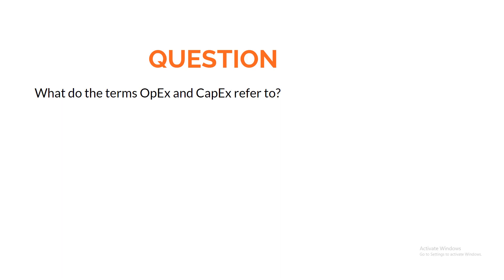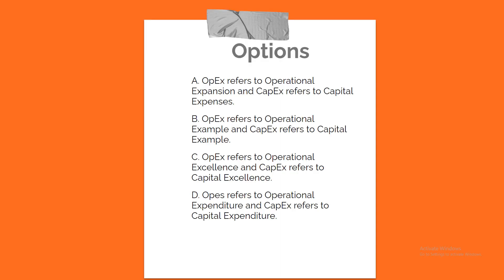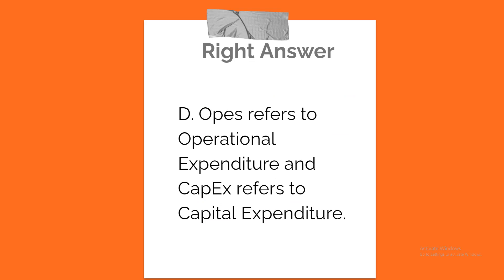Question. What do the terms OPEX and CAPEX refer to? A. OPEX refers to operational expansion and CAPEX refers to capital expenses. B. OPEX refers to operational example and CAPEX refers to capital example. C. OPEX refers to operational excellence and CAPEX refers to capital excellence. D. OPEX refers to operational expenditure and CAPEX refers to capital expenditure. Correct answer: D. OPEX refers to operational expenditure and CAPEX refers to capital expenditure.